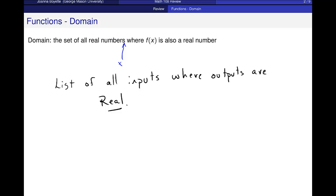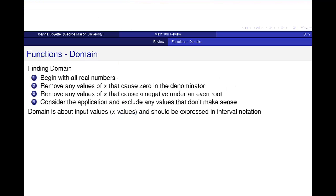Now in some ways it's a list of all inputs where the outputs might be nice or not super complicated. So that's the idea, and we want to get an idea of where this domain is for some functions.